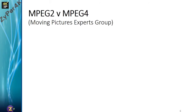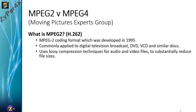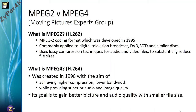We'll take a quick look at MPEG-2 and MPEG-4. MPEG-2 was developed in 1995 — hard to believe it's 20 years old. Most of us experience MPEG-2 encoded formats on digital TV broadcasts, DVDs, and Blu-rays. Ultimately it is quite a lossy compression technique for both audio and video. Three years after MPEG-2, the Moving Pictures Experts Group released MPEG-4, known today as H.264. MPEG-4's goal was to achieve higher compression using lower bandwidth while maintaining as much picture and audio quality as possible.